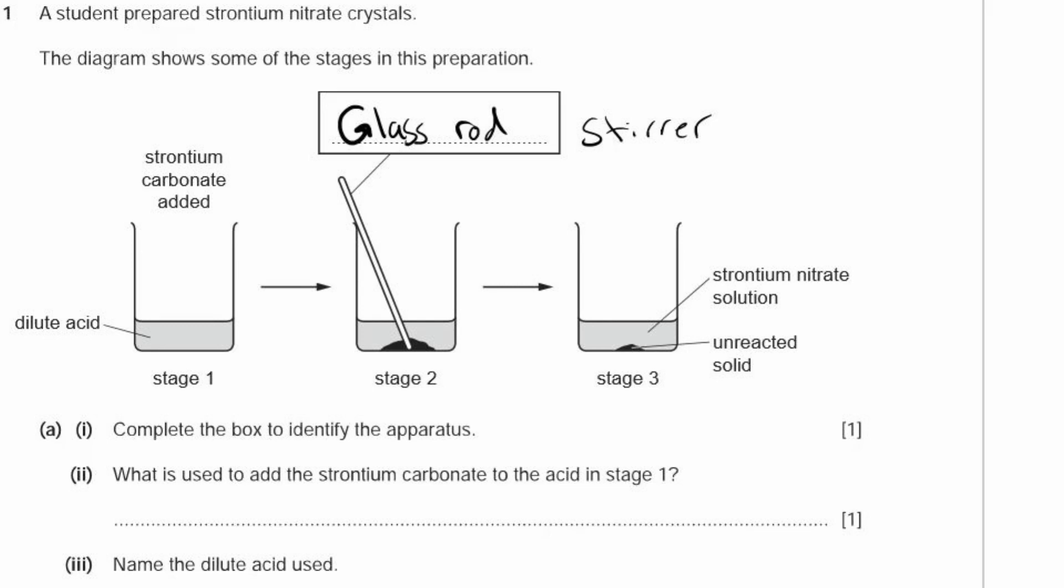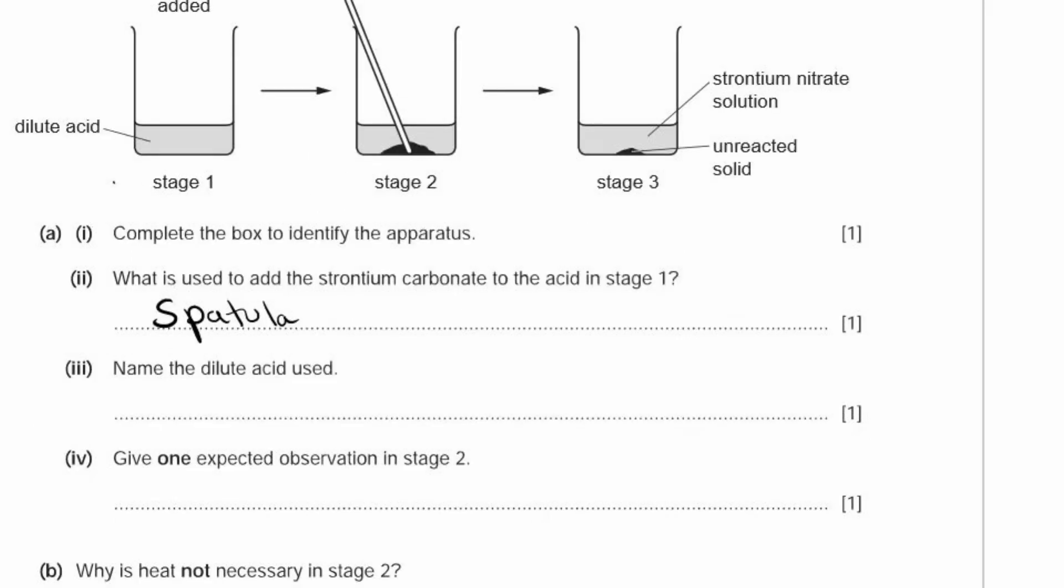A2. What is used to add the strontium carbonate to the acid in stage 1? Well, that is a spatula. A3. Name the dilute acid used. It created strontium nitrate from strontium carbonate, so it had to be nitric acid.